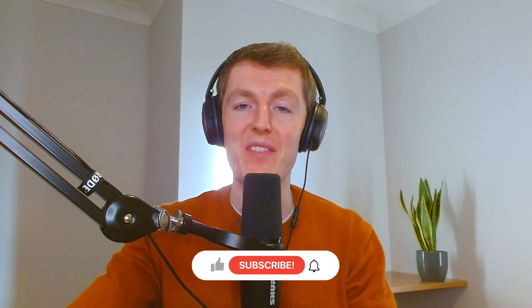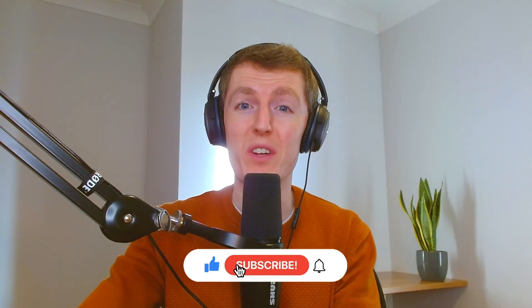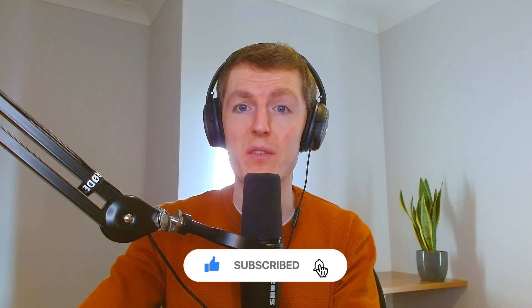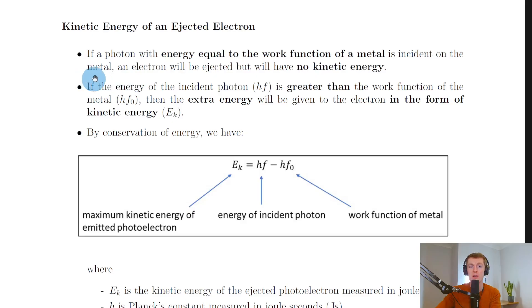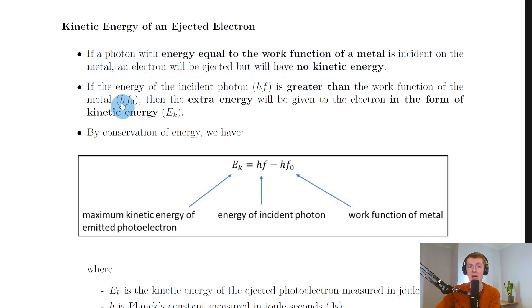Welcome back. In this video we're going to go over the kinetic energy of an ejected electron. It starts by saying that if a photon with energy equal to the work function of a metal is incident on the metal, an electron will be ejected but will have no kinetic energy.